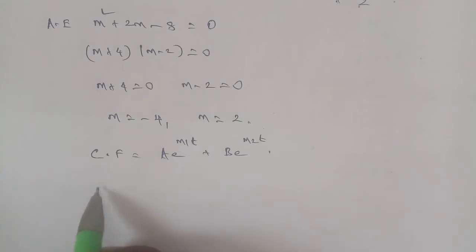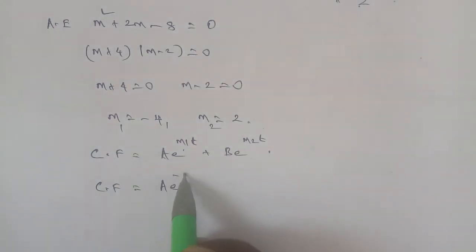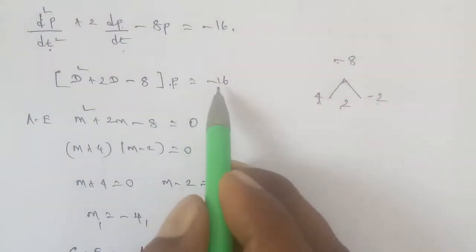The complementary function is equal to A e^(m₁t) plus B e^(m₂t), where A and B are constants.